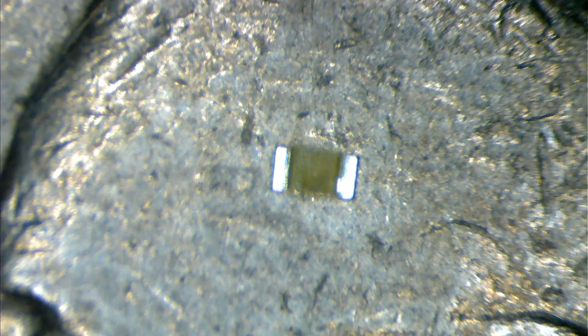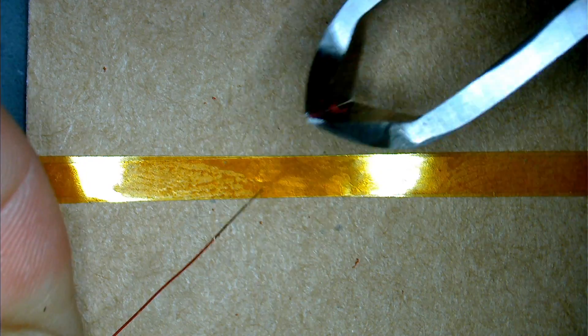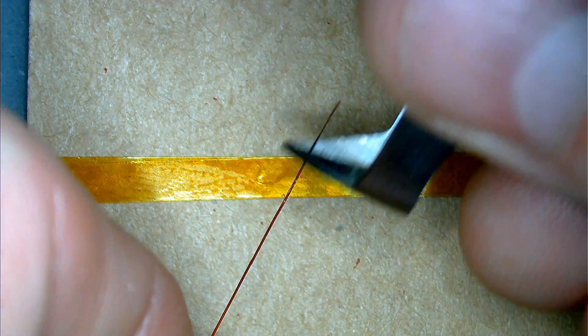This is an 0402 LED. This is a quarter for size comparison. On to the wire. This is 34 gauge or 0.18 millimeter epoxy coated, so that just needs to get scraped off so that I can solder it.